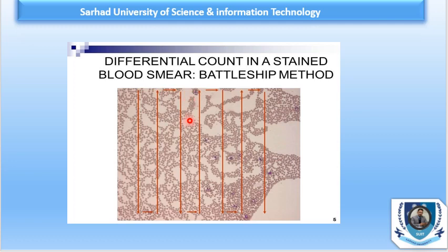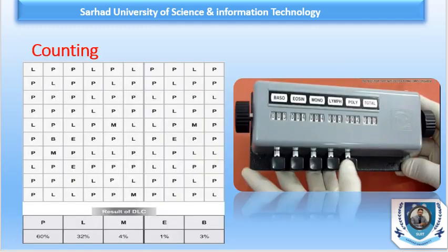The counting procedure continues until 100 cells have been counted, at which point the DLC is complete. Counting can be done using a manual counter or an electronic counter. With a manual method, individual cells are recorded on paper — for example: polymorphs 60%, lymphocytes 32%, monocytes 4%.